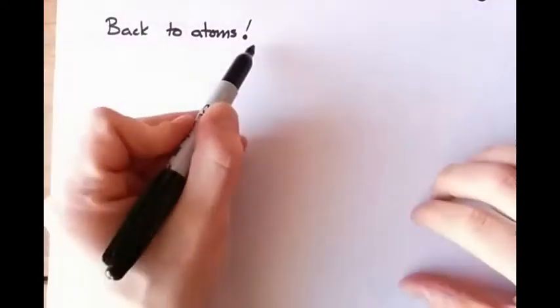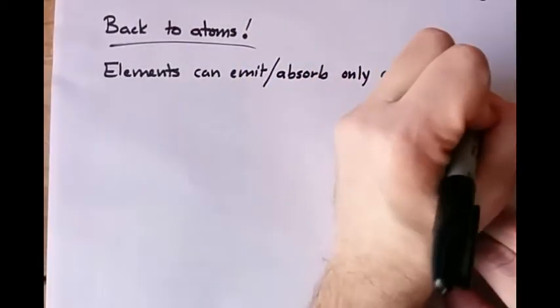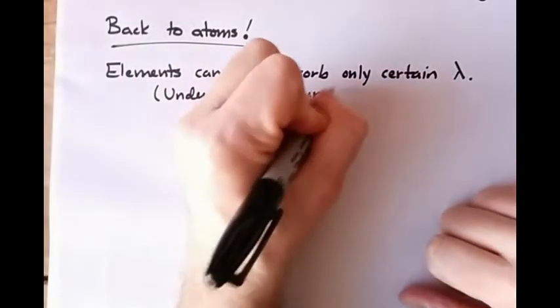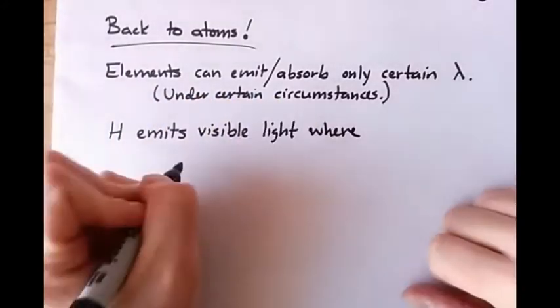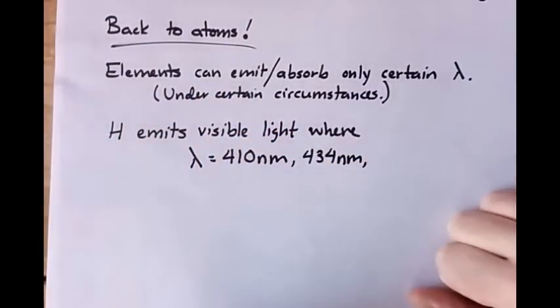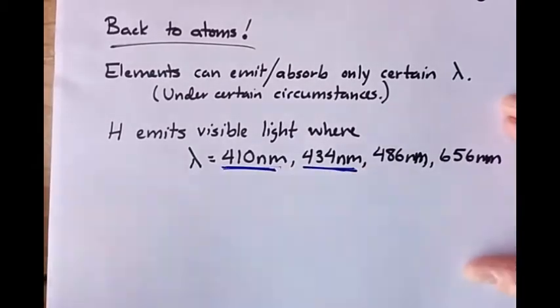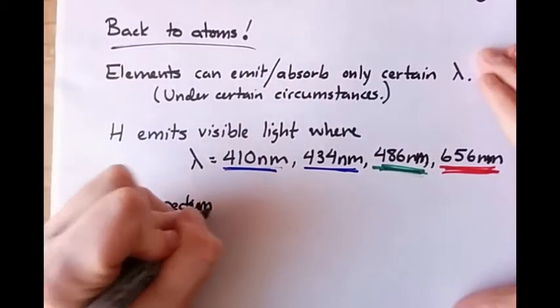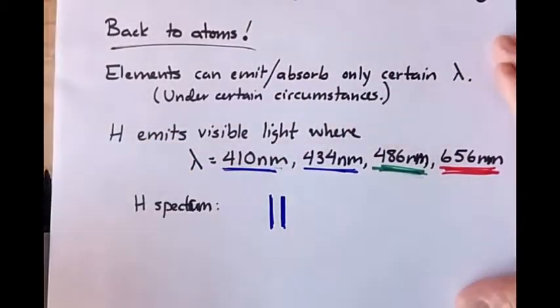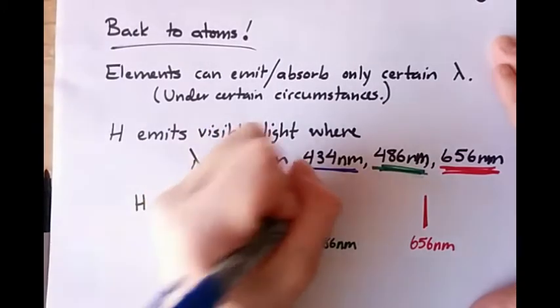Let's shift gears and think about atoms. Under certain conditions, elements can emit and absorb only certain wavelengths. For example, hydrogen emitting light under these special conditions can only emit visible light at 410 nanometers, 434 nanometers — those correspond to purplish-bluish colors — 486 nanometers, which is cyan, and 656 nanometers, which is red. If hydrogen is emitting light, it will only emit visible light at those 4 wavelengths.